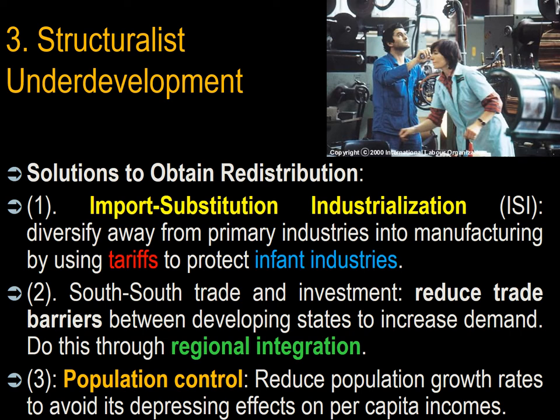The third structuralist solution is population control — reducing population growth to avoid its depressing effects on per capita incomes. This can have long-term demographic implications, as in China with the one-child policy, where one child must support two parents and four grandparents. Examining differential fertility programs between Pakistan and Bangladesh illustrates the impact: Bangladesh has been much more successful in deliberately reducing family size, resulting in about 25% less population than Pakistan, even though at independence in 1971, East Pakistan — today Bangladesh — had a larger population than West Pakistan.